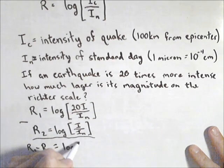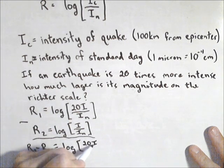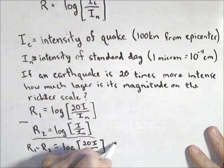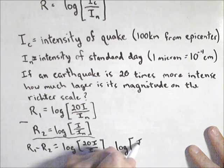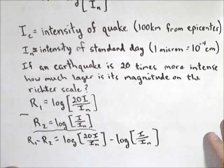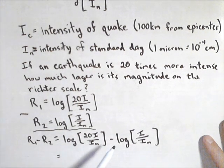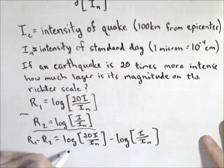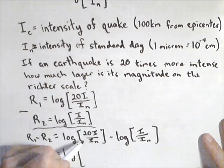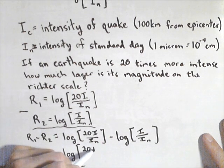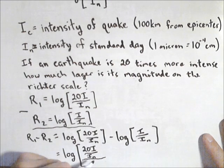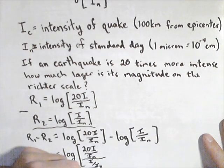We get log of 20I over I_n minus log of I over I_n. Now most of our work comes in this next step, which is to use properties of logs. Because we have subtraction, we can rewrite it as a single log with division: log of (20I/I_n) divided by (I/I_n).